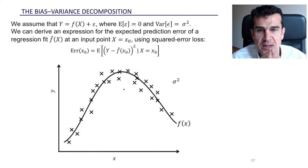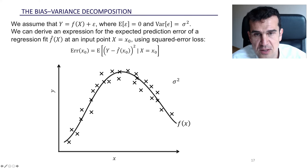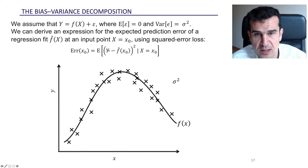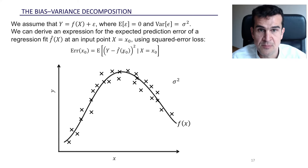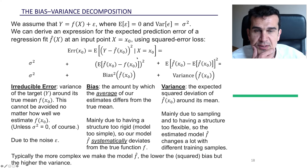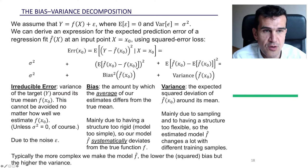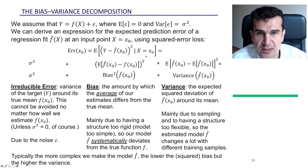What we're going to study is the error we make when we want to predict the output value y corresponding to a certain input x zero. We're going to measure that error as the quadratic error — the difference between the output and our estimation for that input x zero. There's a hat on the estimate, meaning this is our estimation of f of x zero. What we're going to do is decompose this error into three terms.